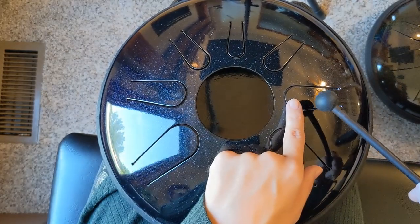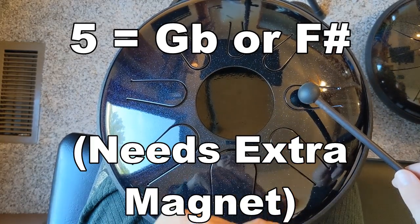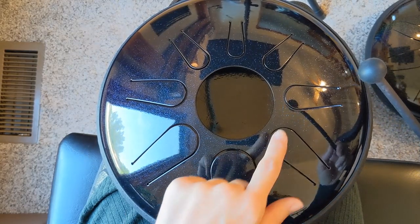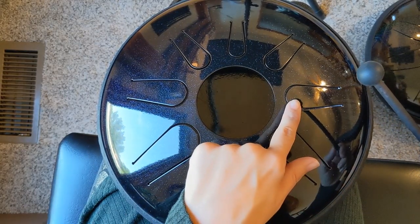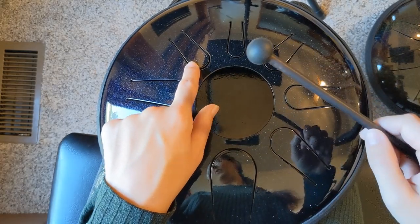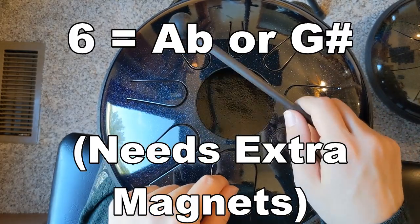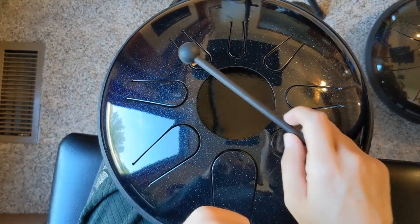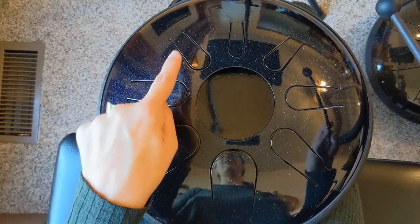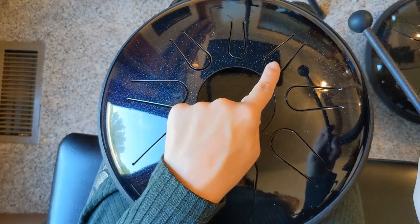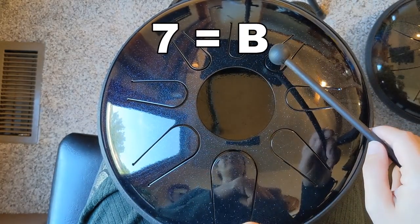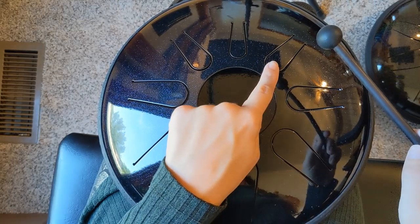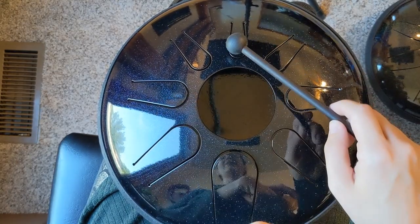And now we're going to move on to tongue number five, and that's going to be a G flat. And that's also going to require some extra magnets. Tongue number six is an A flat. And I believe, yep, this one also needs some extra magnets to get that down to an A flat. Tongue number seven is a B. And tongue number eight is a D flat.